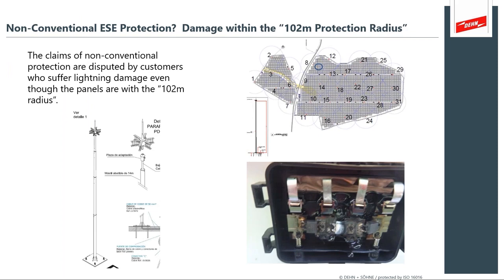There have been a lot of discussions about non-conventional protection measures where the product claims a protective capability not actually demonstrated in the field. In one case, an ESE — early streamer emission — protection mast placed around a solar field with a large claimed protection radius: customers have shown us that even though the bypass diode board was underneath the so-called zone of protection, it was still subject to massive direct strike damage. Does it really provide a 102-meter protection radius? That's why it's important to stay with conventional, industry-standard approved protection measures.